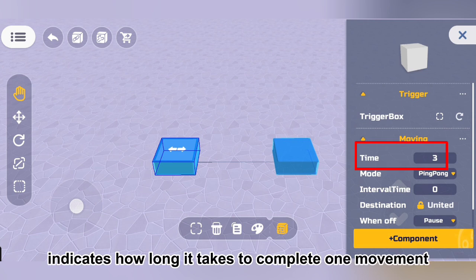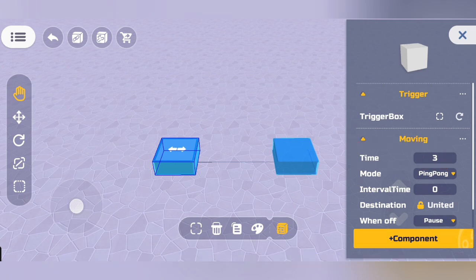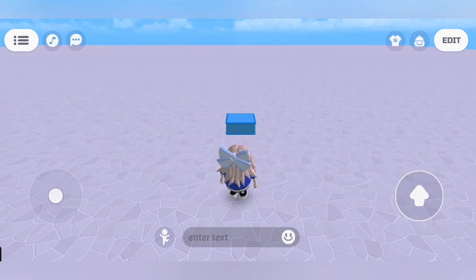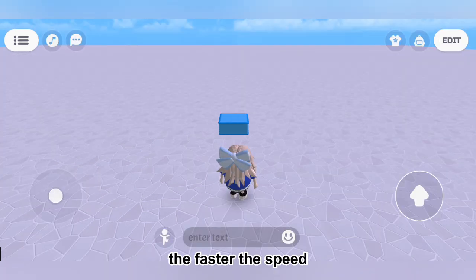Time indicates how long it takes to complete one movement in seconds. The larger the value, the slower the speed. The smaller the value, the faster the speed.